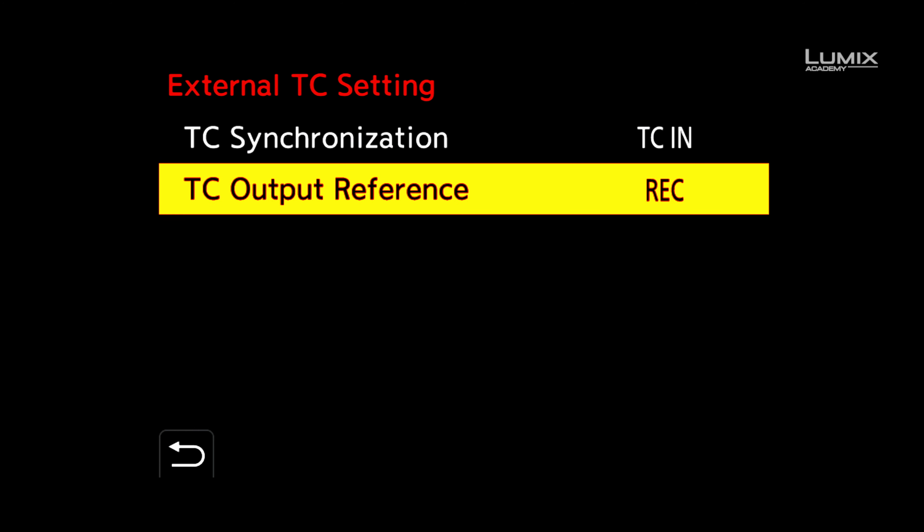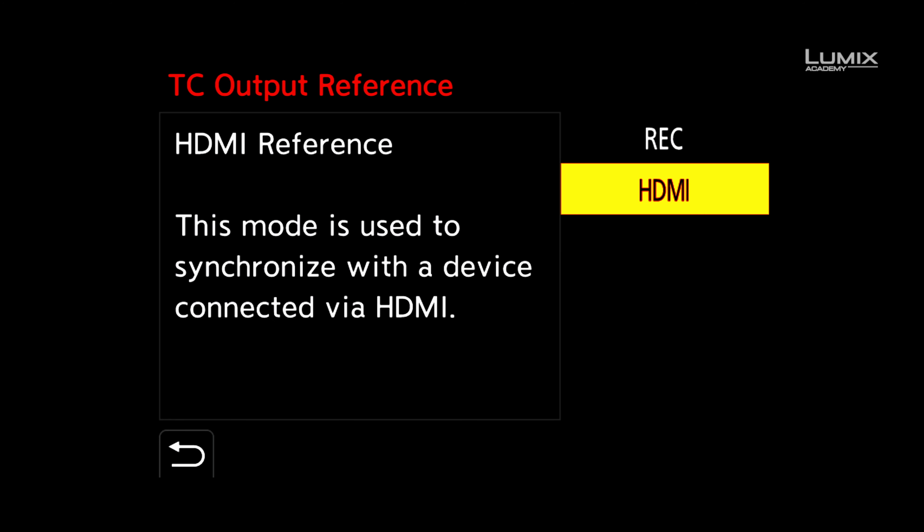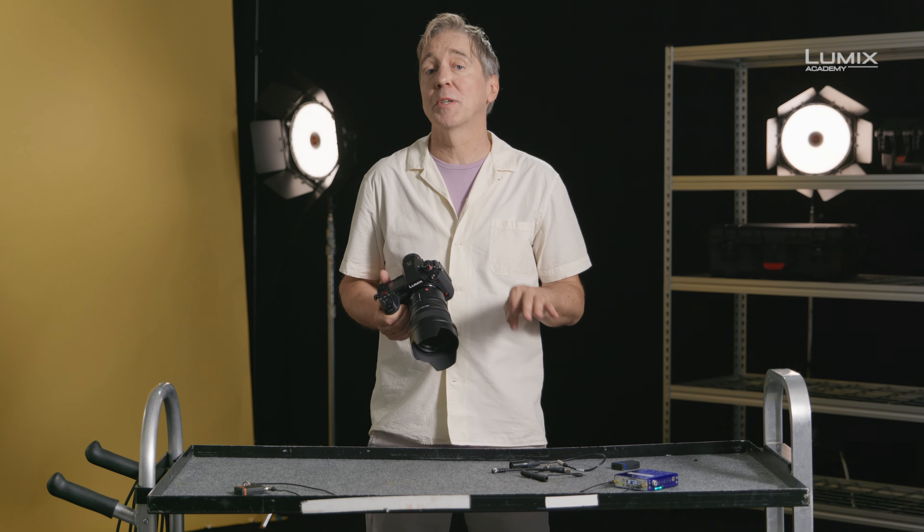The final option is timecode output reference, which allows you to choose between recording reference — the option you'll use in a multicam setting — or HDMI reference, which is used when you simply want to record externally via HDMI whilst retaining sync. It's important to note that certain timecode devices are more accurate than others, and there's always the possibility of drift. If you do get drift, always remember to re-sync your devices, and certainly at the start of each recording session ensure all are synced up.